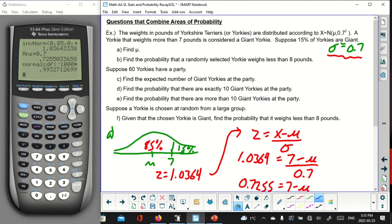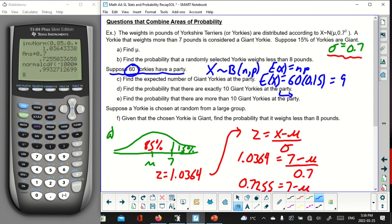Here comes the classic IB move on these questions. It starts off as a normal distribution question, and then it sort of morphs into something else. Suppose 60 Yorkies have a party. It would be a great party. Find the expected number of giant Yorkies at the party. The expected number of giant Yorkies is just going to be 60 times the probability that a Yorkie is giant. We get 60 times 0.15, that's 9 Yorkies. This is really turning into a binomial distribution at this point. Now, out of those 60 Yorkies, find the probability that there are exactly 10 giant Yorkies. We've got multiple events happening multiple times. This is a binomial distribution. I want to find out what's the probability that there are exactly 10. That is the job of binome PDF.